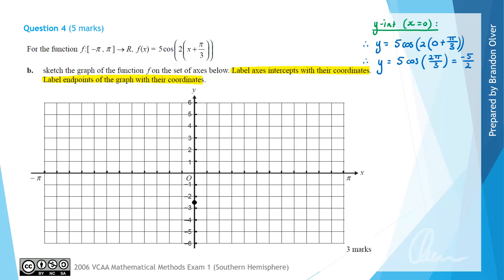Because the period of the graph found before was pi, when we go to x equals pi we'll get the same y value, and when we go to x equals negative pi we'll also have the same y value. Because the domain has square brackets for our endpoints, these dots need to be coloured in.